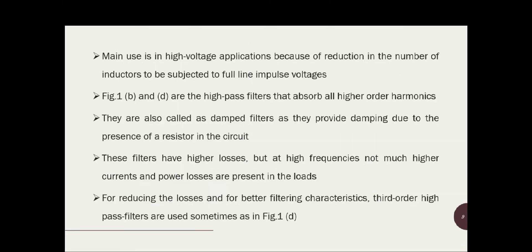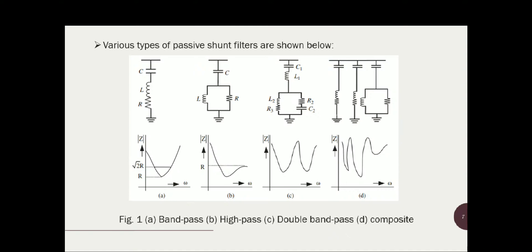A high pass filter normally absorbs higher-order harmonics. Because of the presence of resistance in the circuit, there is characteristic damping, which is why it is also known as a damped filter. High pass filters have higher losses, but fortunately at high frequencies, this does not lead to much higher currents and power losses — which is one of their advantages.